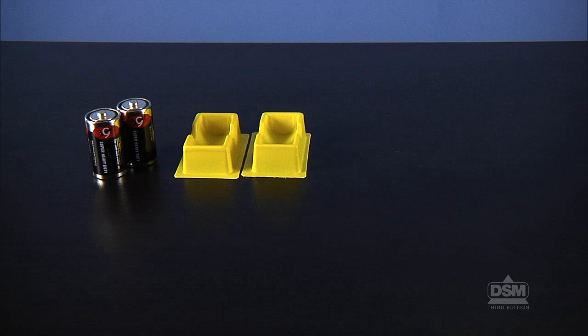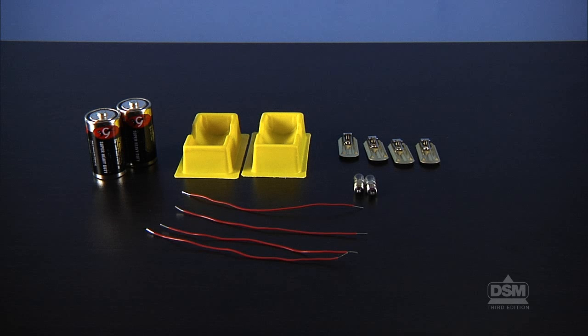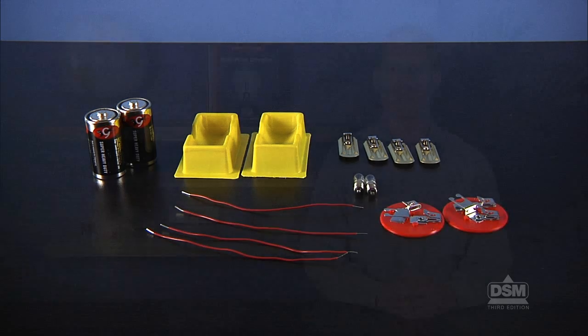Each team of two will need two batteries, two battery holders, four electrical clips, four pieces of wire, two bulbs, two bulb holders, and three new 15 cm pieces of insulated copper wire with the ends cut and stripped.